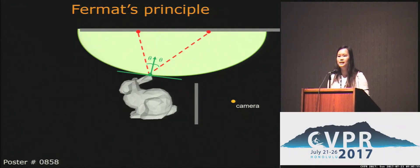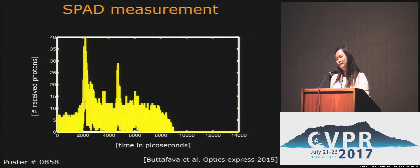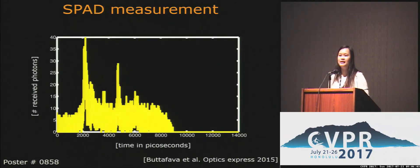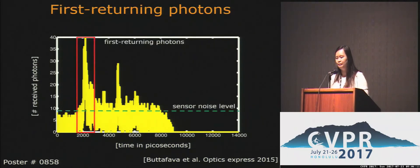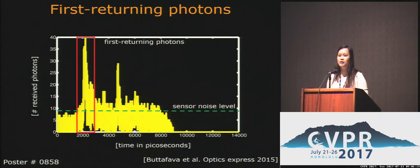This is a direct result of Fermat's principle. To detect first returning photons, we make use of a highly sensitive CMOS detector called SPADs to continuously measure the times of arrival of photons at each pixel. The first peak corresponds to the first returning photon, and we use the time of flight to invert the shape of the hidden object.